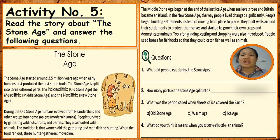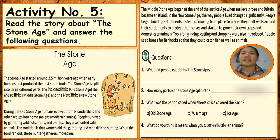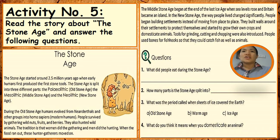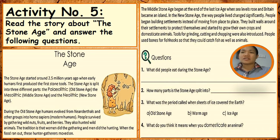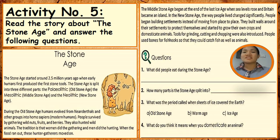We now come to the end of our online learning discussion for week 5. This week's activity: read the story about the Stone Age and answer the following questions. What did people eat during the Stone Age? How many parts is the Stone Age split into? What was the period called when sheets of ice covered the earth? And what do you think it means when you domesticate animals? Good luck!